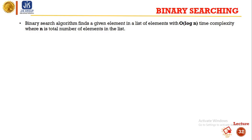Binary search looks for a particular item by comparing the middle-most item of the collection. If a match occurs, then the index of the item is returned. If the middle item is greater than the item, then the item is searched in the sub-array to the left of the middle item. Otherwise, the item is searched for in the sub-array to the right of the middle item. This process continues on the sub-array until the size of the sub-array reduces to zero.